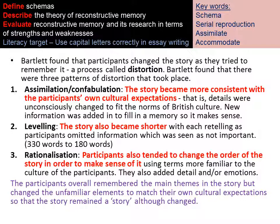Bartlett found that the story was distorted — changed by participants — and he identified three main patterns of distortion. First, assimilation or confabulation: the story became more consistent with participants' cultural expectations, with details unconsciously changed to fit British cultural norms. Second, levelling: the story was made shorter with each retelling as participants omitted information they didn't think was particularly important. Third, rationalisation: participants changed the order of the story to make sense to them, also altering specific details — for example, recalling that characters were on a boat rather than specifically a canoe. Overall, participants remembered the main themes and gist of the story, but changed unfamiliar elements to match their own cultural expectations.